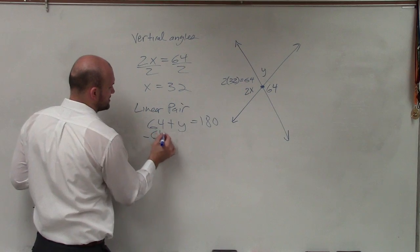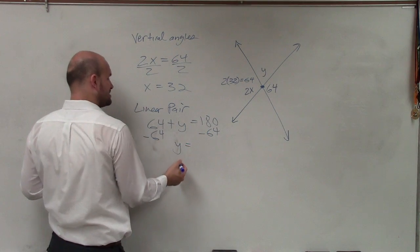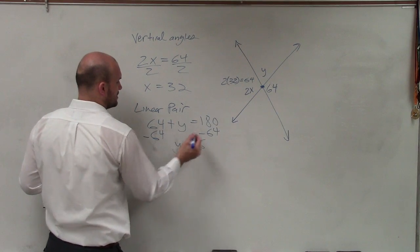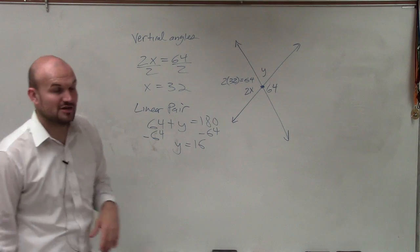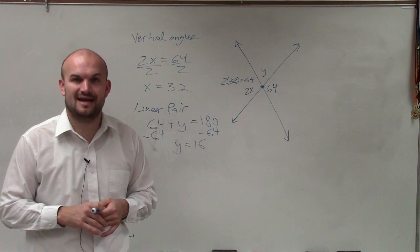So now to solve for y, I subtract 64, and I get y equals 116. So there you go, ladies and gentlemen. That is how you solve for x and y using vertical and linear pair angles. Thanks.